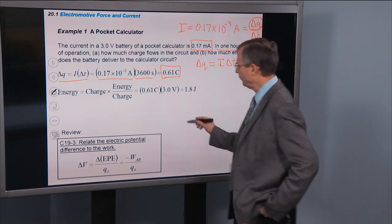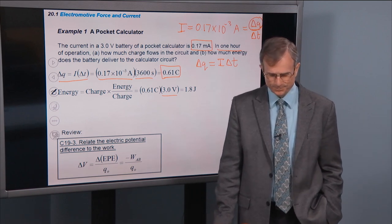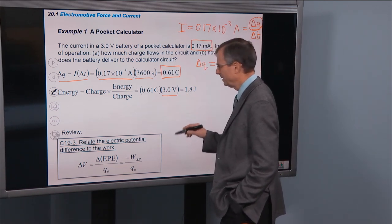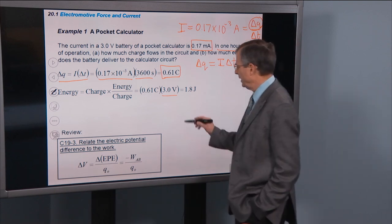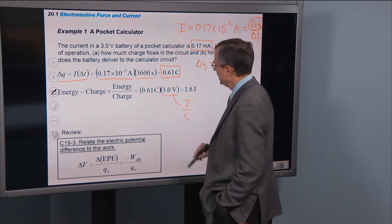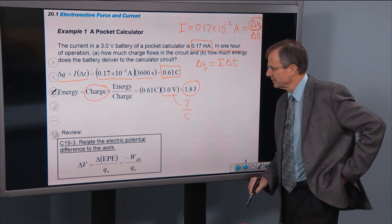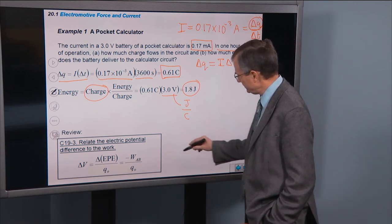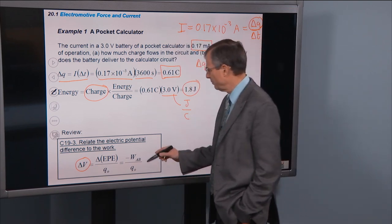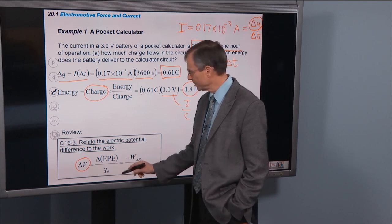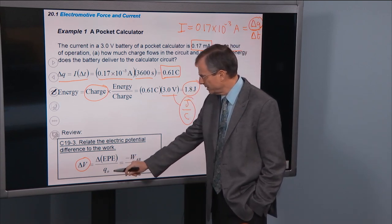Now for the energy delivered: the voltage is energy per charge, expressed as joules per coulomb. From Chapter 19, the potential difference is the change in electric potential energy in joules divided by charge. So multiplying the charge by the voltage gives us the actual amount of energy delivered. Energy equals charge times voltage, giving the energy the battery delivers to the calculator circuit.